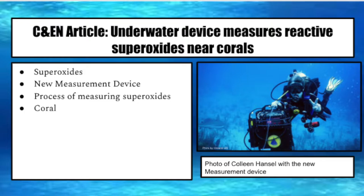The article then discusses the new device that Colleen Hansel of Woods Hole Oceanographic Institute helped make. The device is the size of a small suitcase and made of things like pumps, flow cells, and a photomultiplier tube. It can be brought down to the deeper parts of the coral reefs, unlike the previous device located on a boat above the reefs. This device only needs one diver to operate, making the trips much more efficient and easier to complete.